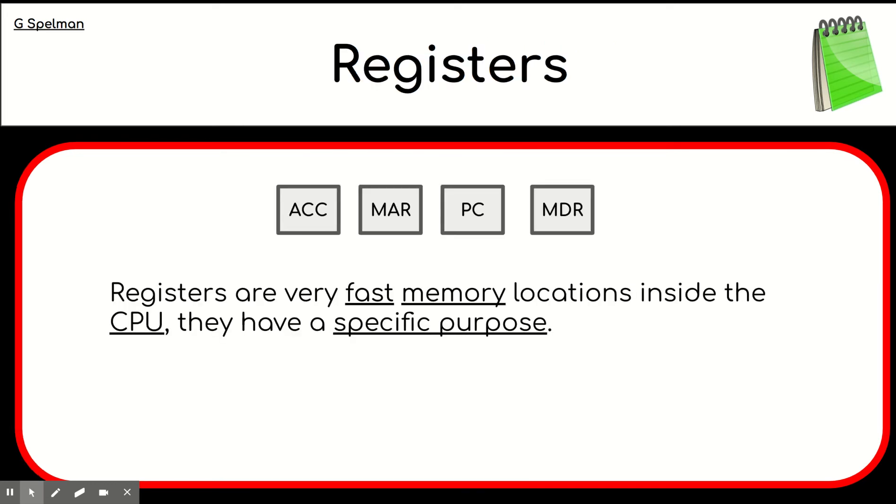Registers. Now, registers are the fastest memory in the architecture that we will discuss. So they're tiny little memory locations inside the CPU. And at GCSE, we learn about four registers. They all have specific functions. And we're going to learn about that. So registers are very fast memory locations inside the CPU. They have a specific purpose.